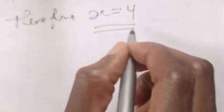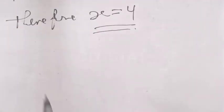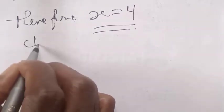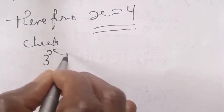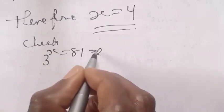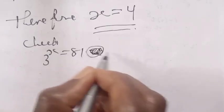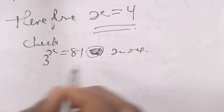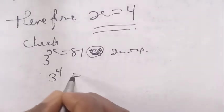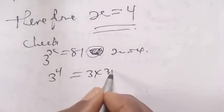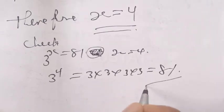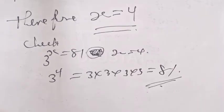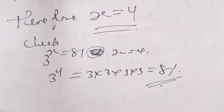Final answer: s is equal to 4. We can also check. 3 raised to power s is equal to 81 at s equal to 4: 3 raised to power 4 is 3 times 3 times 3 times 3, which is equal to 81. You can see that our answer is right. Please don't forget to like, share, comment, and subscribe. Thank you.